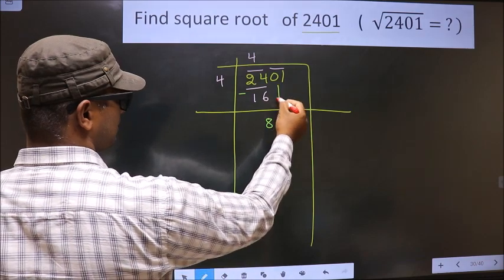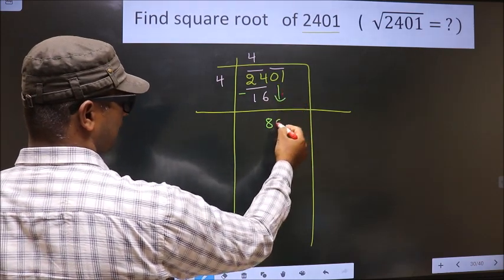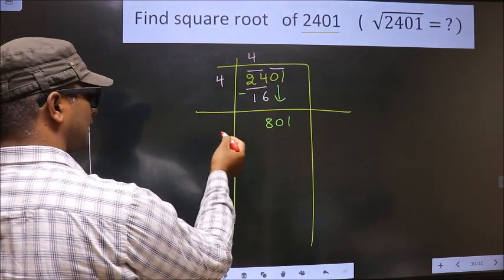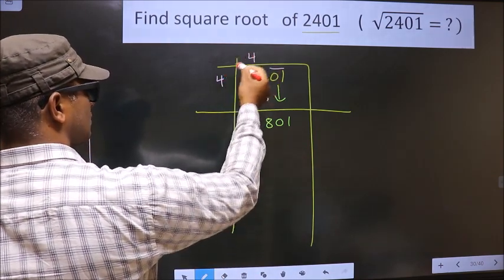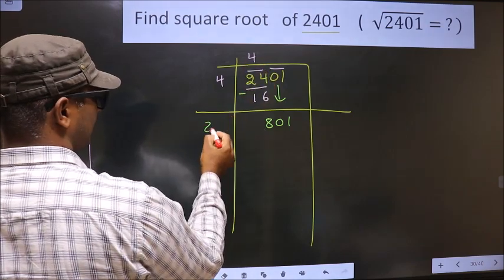Now you take this pair down. It will make 8, 0, 1. Now here you should add these two numbers. That is 4 plus 4. We get 8.